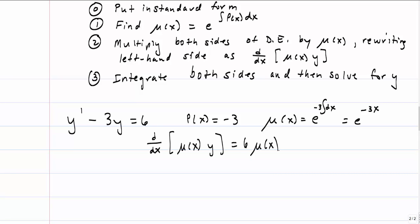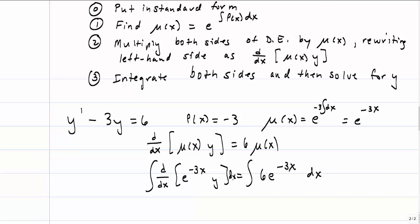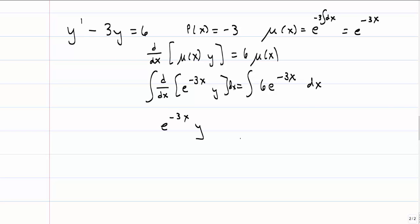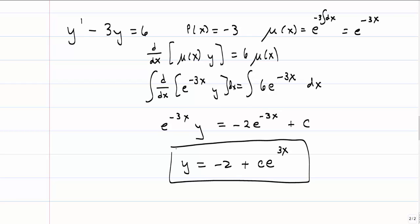Plugging in mu(x) = e^(-3x) and integrating both sides with respect to x: the left-hand side is simply mu(x) · y, which will always work out this way. The right-hand side integrates to -2e^(-3x) plus a constant C — and here we do need the constant. Solving for y by dividing both sides by e^(-3x), we get y = -2 + Ce^(3x).